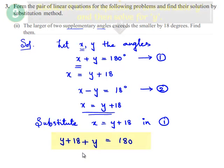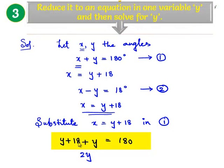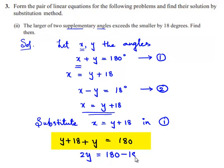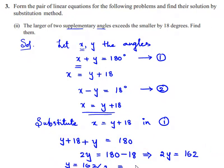So y plus y is 2y, and transposing 18 to the right hand side, this becomes 2y is equal to 180 minus 18. That implies 2y is equal to 162. So y can be written as 162 divided by 2, which is nothing but 81 degrees.